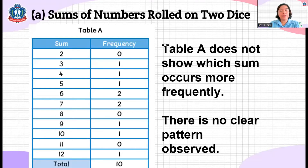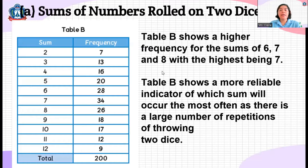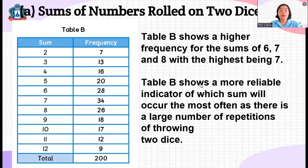When she rolled the dice 200 times, Table B shows a higher frequency for the sums of six and seven — with 28 and 34 respectively — and eight, with the highest being seven. Table B shows a more reliable indicator of which sum will occur most often, as there is a large number of repetitions. Because she did it 200 times, there will be more repetitions showing which sums occur most frequently.